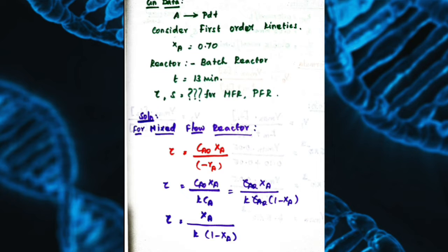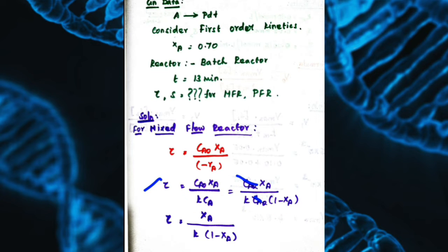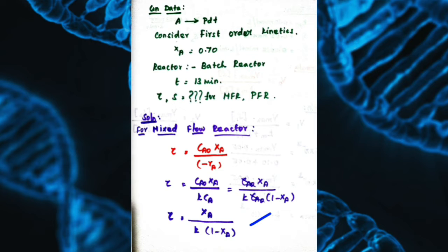First, we will calculate space time and space velocity for the mixed flow reactor. The performance equation is tau = CA0 × XA / (−rA). We are following first order kinetics, so −rA = K × CA, and CA in terms of XA is CA0 × (1 − XA). The CA0 cancels out, so tau = XA / [K × (1 − XA)]. In this equation you know XA, but you have to find the value of K to calculate tau.